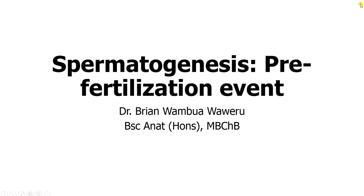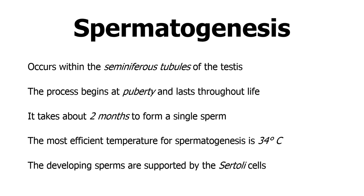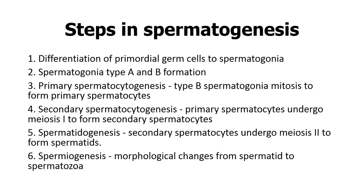Welcome to my YouTube channel. We'll be looking at pre-fertilization events, and one of them is spermatogenesis. It's a process that occurs within the seminiferous tubules and allows the human male to form mature spermatozoa. It begins at puberty and lasts through the whole lifetime of the human male. It takes about two months to form a single sperm, and the most efficient temperature for this process is about 34 degrees centigrade. The developing sperms are supported by what we call the Sertoli cells.